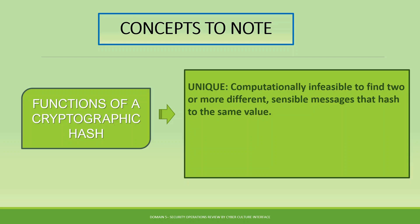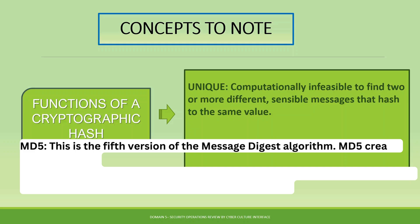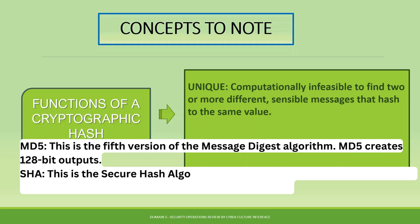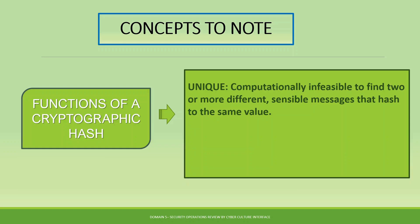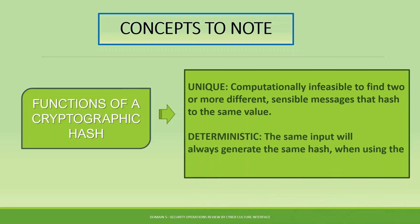Another function of cryptographic hashing is uniqueness — it is infeasible to find two different messages that hash to the same value. Note: when five or six different data items are hashed using the same technique, such as MD5 or SHA-256, the length of the hash value will always be the same, but the actual hash values will be different for each input. The hash length is the same; the hash value is unique for each.